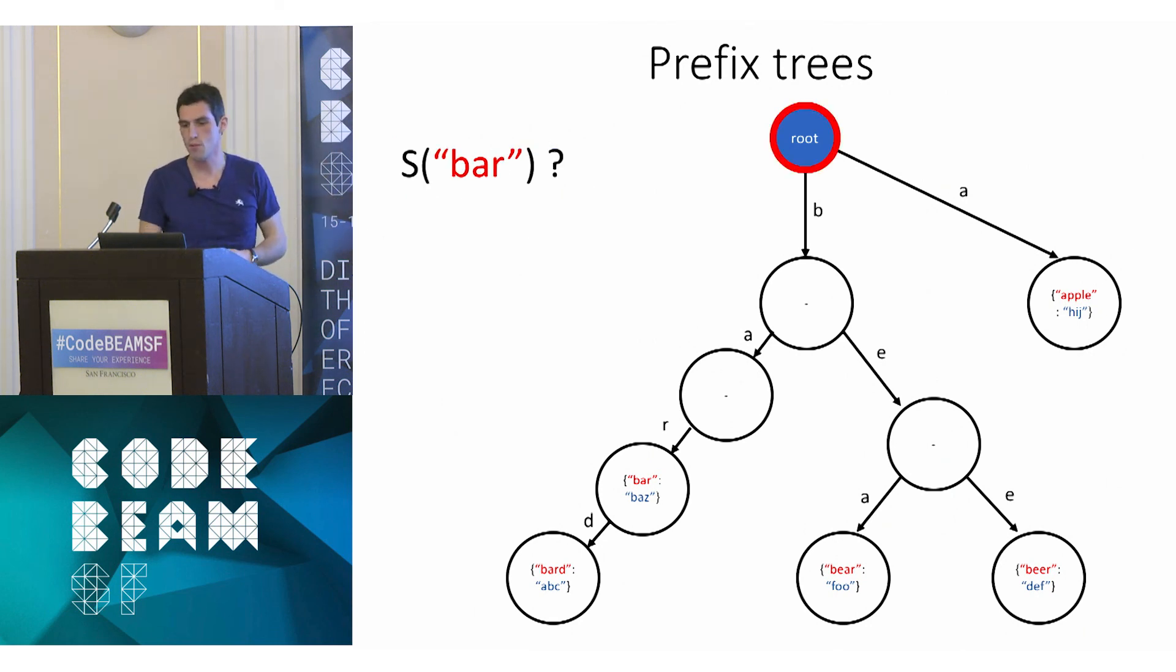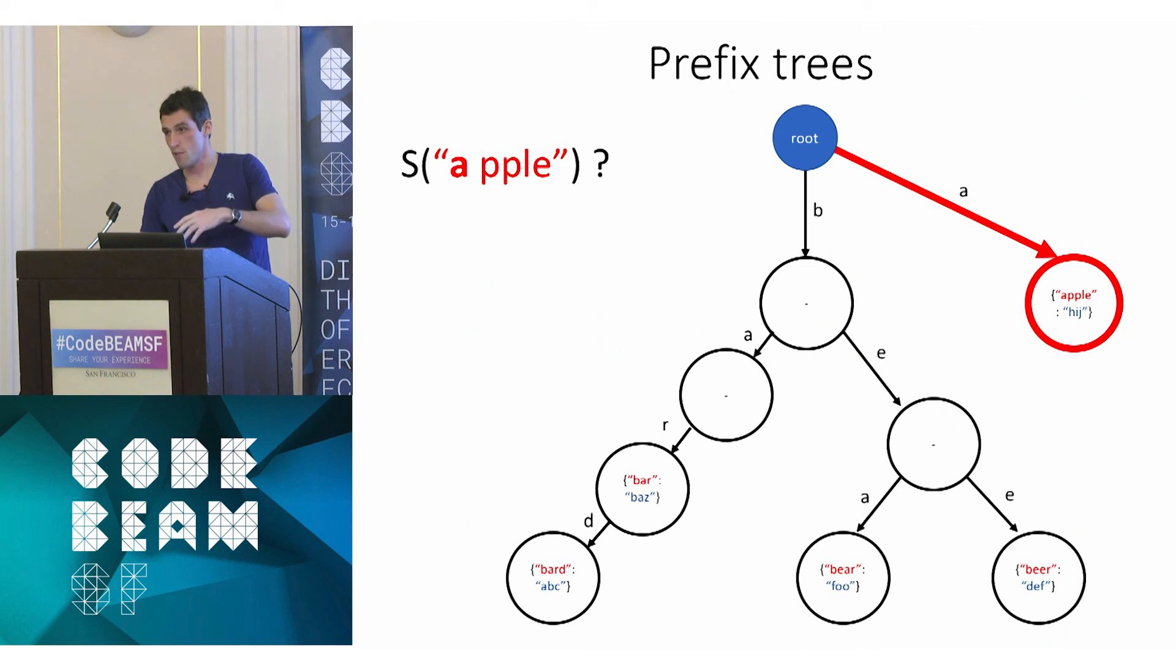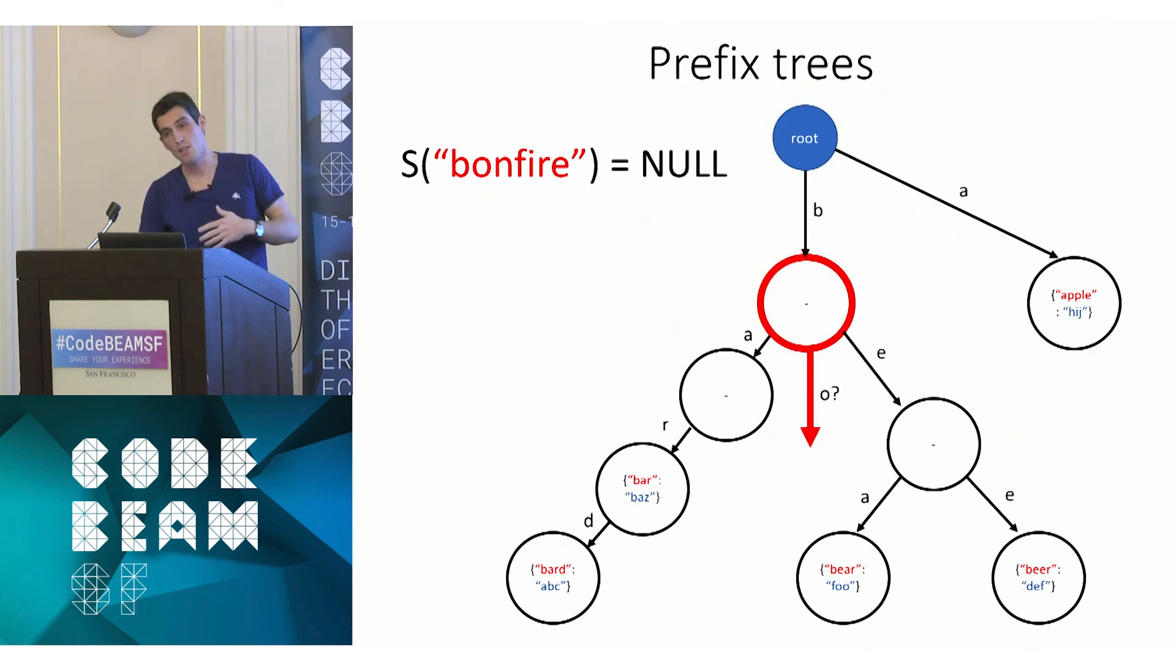And how do we search? Same thing. If we want to look for bar, we start from the root, get the subtree for B, and then from there get the subtree for A, and then from there for R. And then we end up there. We've exhausted the key, so we just have to check if there's a value in there. There is, so we found the value, and we're good. Basically, the other two cases you can encounter is you get to a leaf, and there's no subtree, but the value in there is actually the key you're looking for. You're good too. And the last case is, oh, you get to a leaf, and there's no subtree for the letter you're looking for, in which case you know the key is not in the tree. And that's really it for prefix trees. That's really how they work.